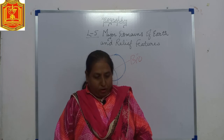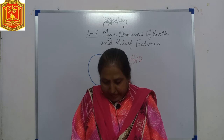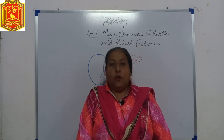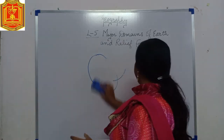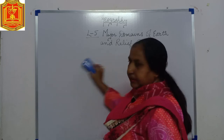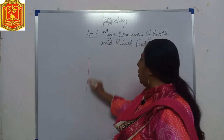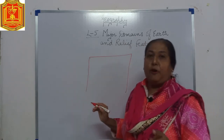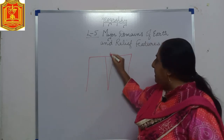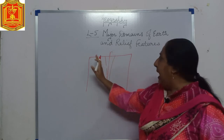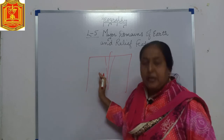Block mountains are created when large masses of land are broken and displaced vertically. When the land breaks vertically there is a deep valley in the center and mountains are formed on either side. That is your block mountain.